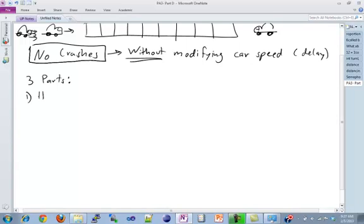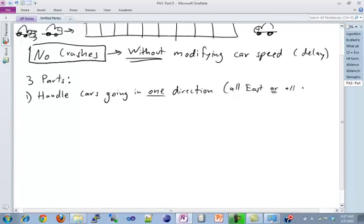For the first part, you should be able to handle cars going in a single direction, either all going east or all west. All cars just go in one direction and they don't crash into each other. How could they crash if they're all going in the same direction? If the car behind another car goes faster, then they'll crash. And that's what we want to avoid in this first part.